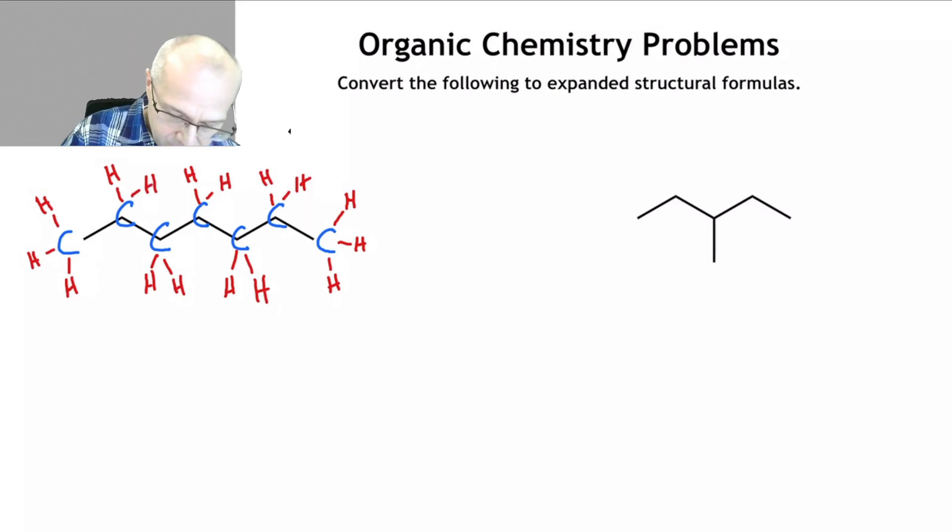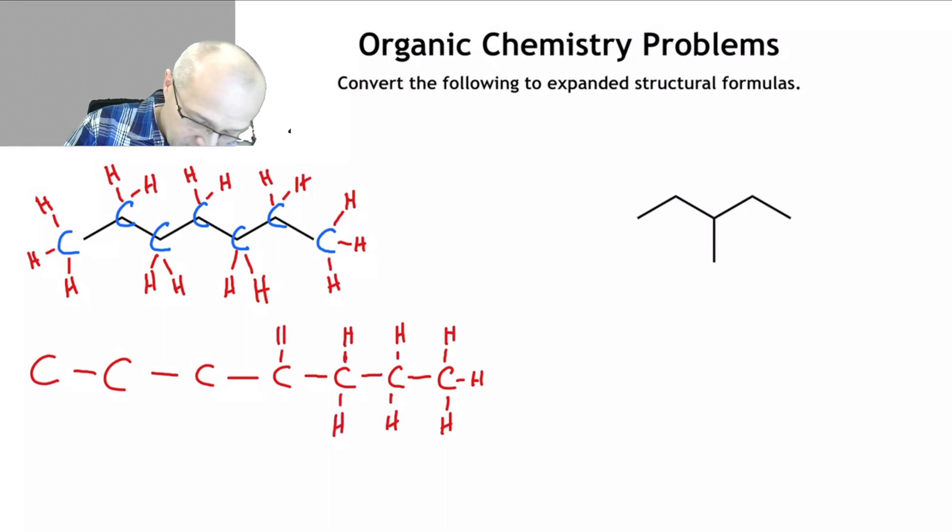Now, if you wanted to draw it out in a linear fashion, you can. One, two, three, seven. Okay, wow. I made up these questions and I made it really hard for myself. One, two, three, four, five, seven. There we go. As you can see, this is quite gangly. It's not pleasant to look at. It's also not pleasant to draw.